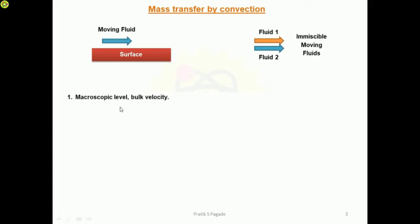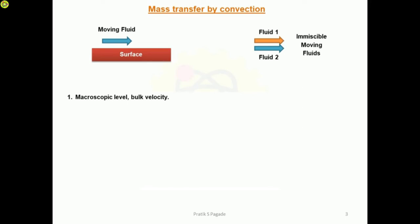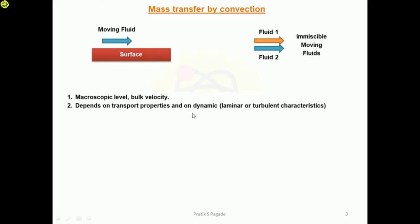Mass transfer by convection occurs at the macroscopic level, associated with bulk velocity. Macroscopic level means surface-level study, not a deep-level study. This mass transfer depends on transport properties and on the dynamic characteristics of the fluid — that is, whether the flow is laminar or turbulent.